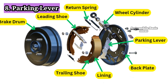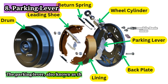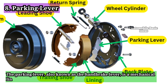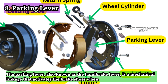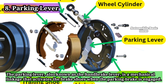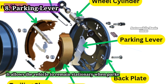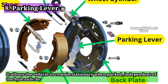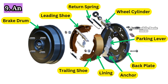8. Parking lever. The parking lever, also known as the handbrake lever, is a mechanical linkage that activates the brake shoes when the parking brake is engaged. It allows the vehicle to remain stationary when parked, independent of the hydraulic braking system.